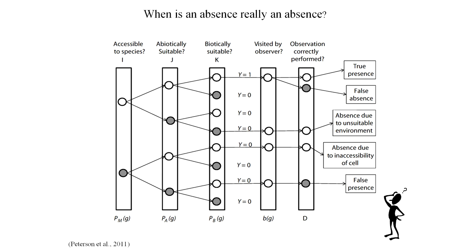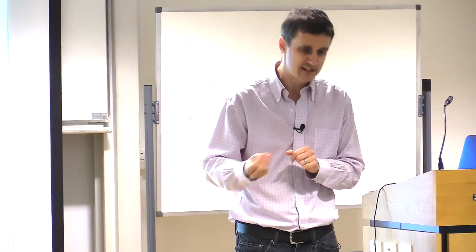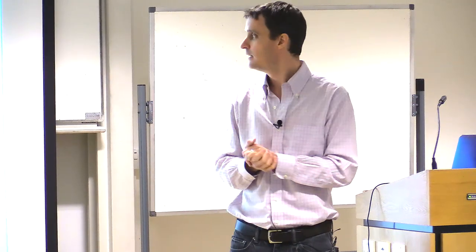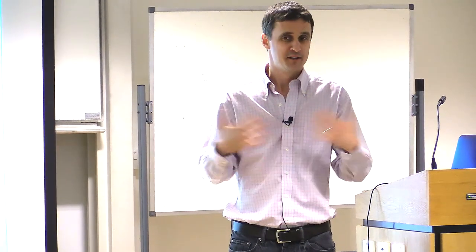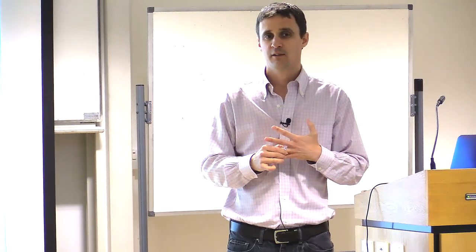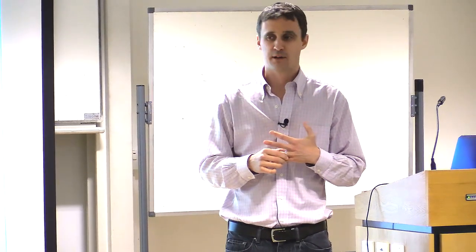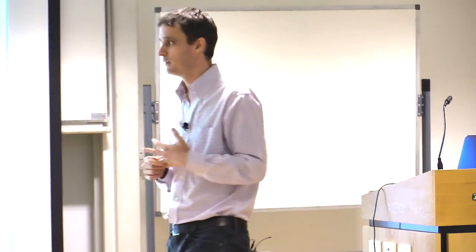Presence data — species is there. Absence data — lots of complications. Do we really want to be using it? Often, if we've got really good absence data and it's truly absences where the species isn't there because of the abiotic environment, then that's useful information — you can build statistically better models. But often those kinds of requirements aren't met in terms of really providing good absence data. Be very cautious when trying to incorporate absence data, and we'll talk about it when evaluating models as well.